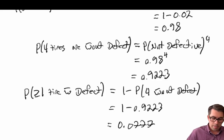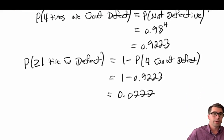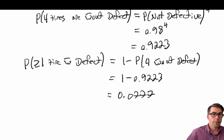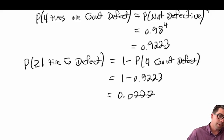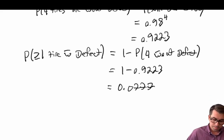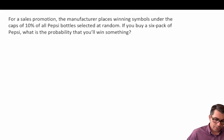So there's our answer: the probability that at least one of our new tires is defective — the probability of greater than or equal to one tire with a defect — is equal to one minus the probability of four tires without defect, which gives us a probability of 0.0777.